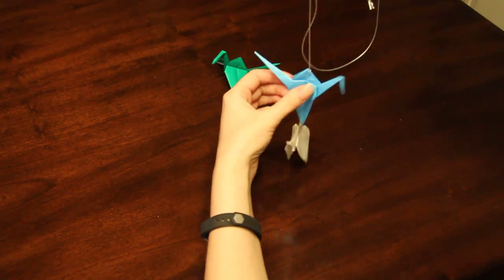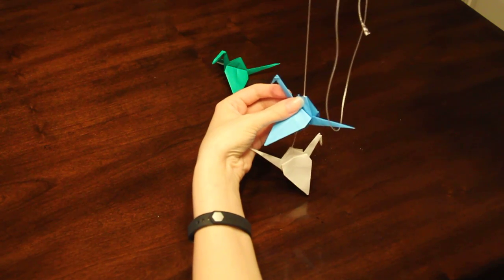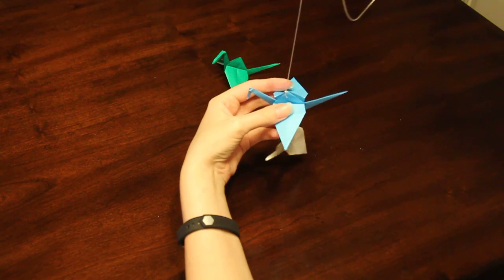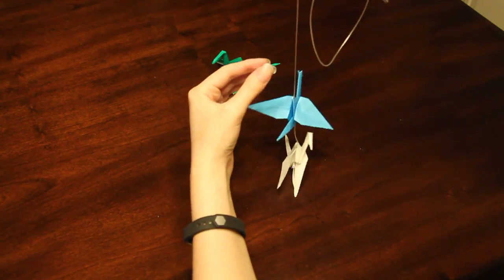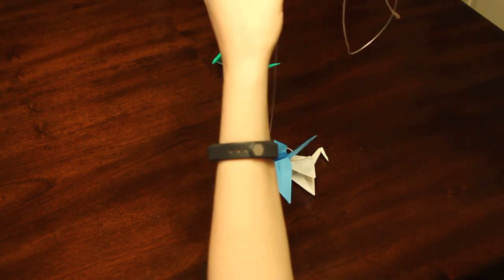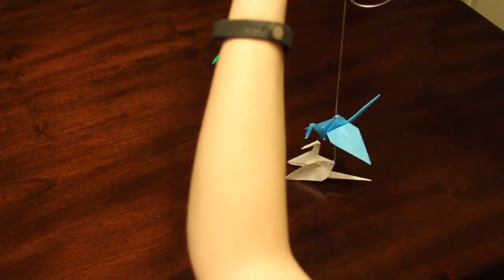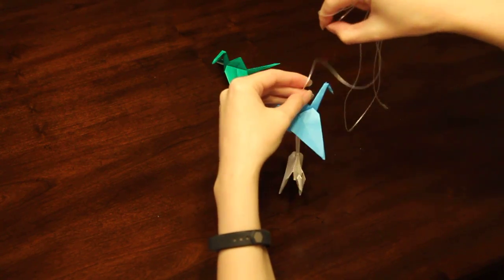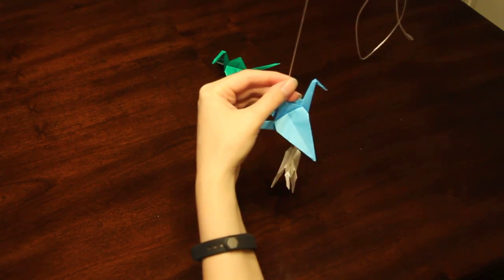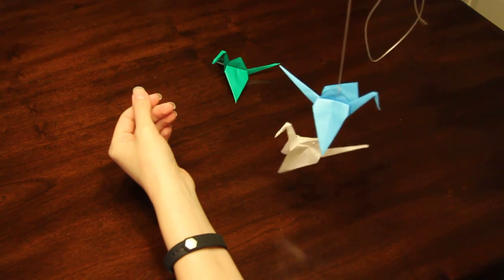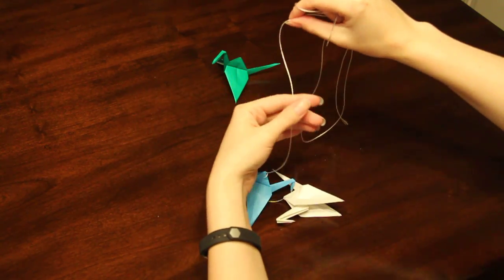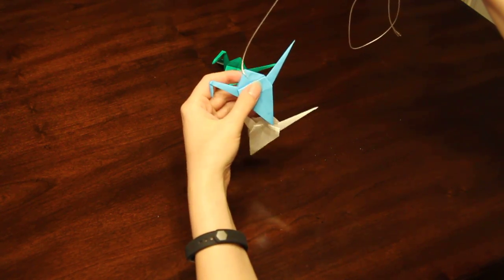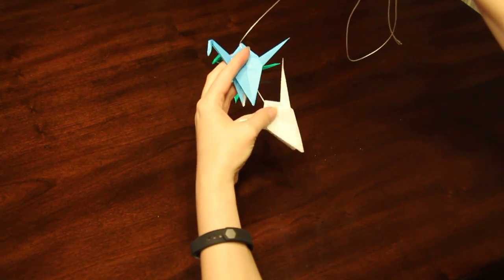You're going to put however many cranes you want on your string - I recommend 9 to 12. When you're spacing them, make sure you leave enough string at the top so they can be hung on the ceiling. Don't put them too close to the top. That's why it's important to space them evenly. It's better to do it a little bit closer than further away, or you'll run out of string.